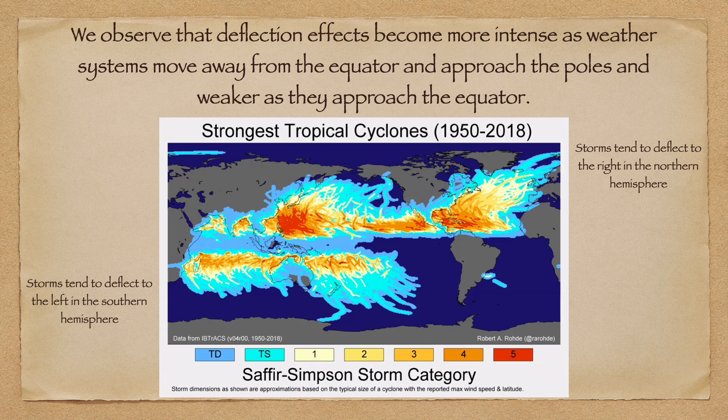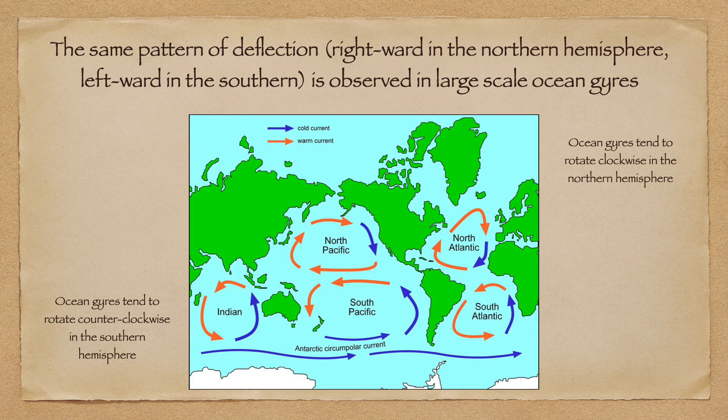This process is further illustrated in this map of tropical storm paths. While the influence of ocean surface temperature is non-negligible, we can see that in general, storms track to the right in the Northern Hemisphere as they leave the equator, and to the left in the Southern Hemisphere. We can further see that there is a tendency for the deflection to grow stronger as the storms move further away from the equator. The same pattern of rightward deflection in the Northern Hemisphere and leftward deflection in the Southern Hemisphere is observed in ocean gyres. Southern Hemisphere ocean gyres rotate anticlockwise, deflecting to the left, while Northern Hemisphere ocean gyres rotate clockwise, deflecting to the right.